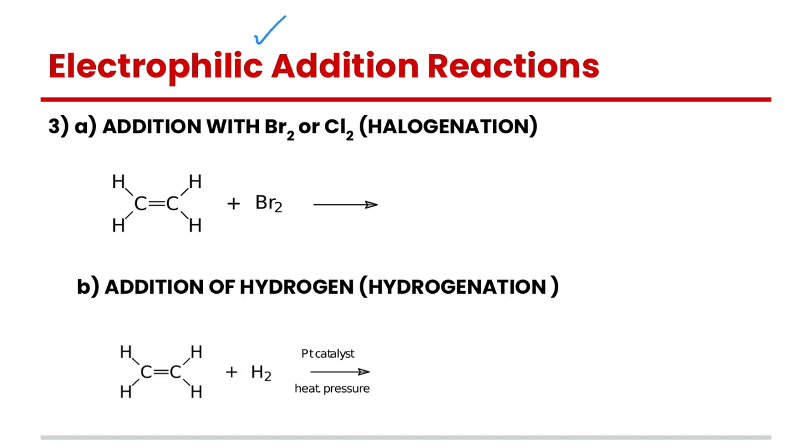If you recall, addition reactions are when we're adding something to a carbon-carbon double bond or triple bond. Having a double bond or triple bond means that we have a much more reactive kind of compound, and so these compounds undergo addition reactions. There are four addition reactions that we're going to look at with alkenes specifically, so let's jump right in and go through the specifics because they are all kind of the same.